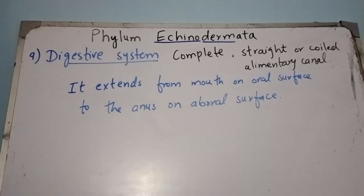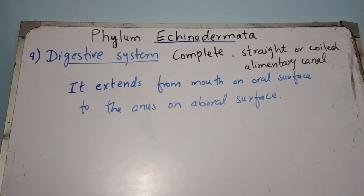The digestive system of echinoderms is well developed and complete, meaning the alimentary canal has two openings: one is the mouth and the other is the anus. The alimentary canal is well developed and may be a straight or coiled tube. It extends from the mouth on the oral surface to the anus on the aboral surface.